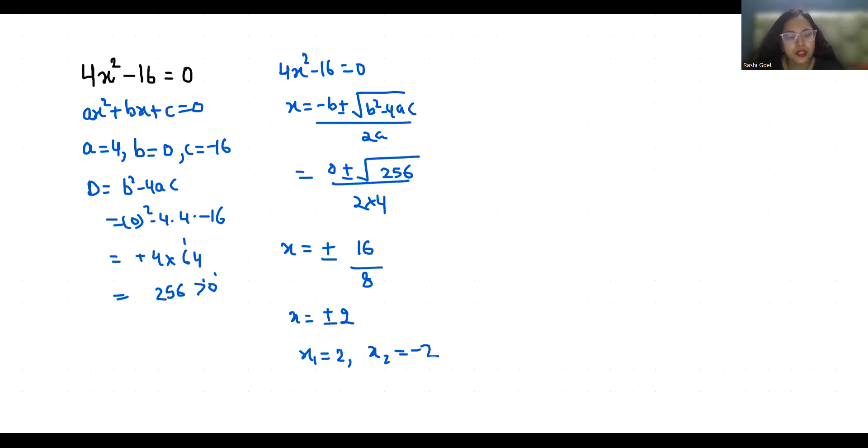I hope it's clear. Now second method. 4x² - 16 = 0. So 4x² = 16. x² = 16/4. x² = 4. We can write this as x² = 2².